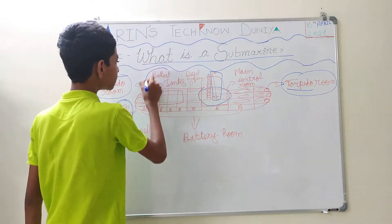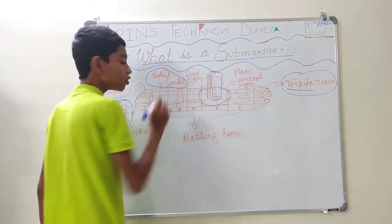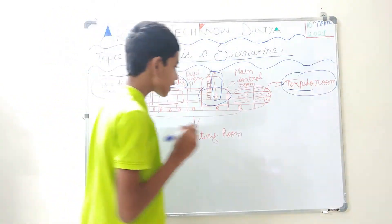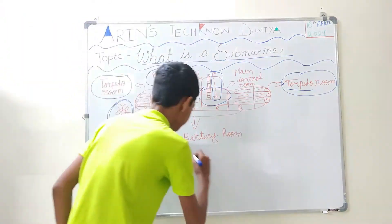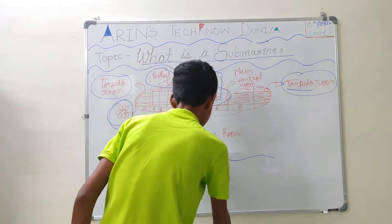Now we can see here something known as ballast tanks. What are ballast tanks? If a submarine is on the surface, it will blow air into the ballast tanks so that the weight of the submarine is less and it can float on water.